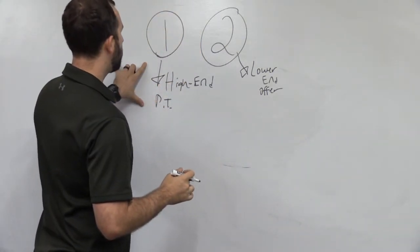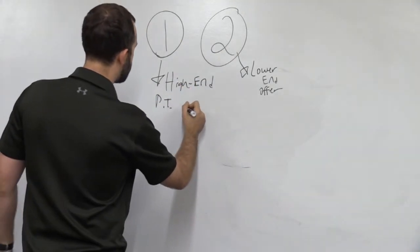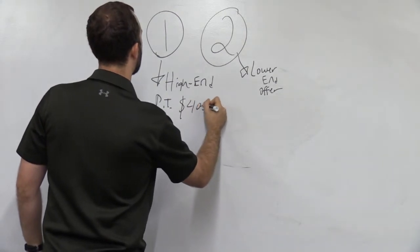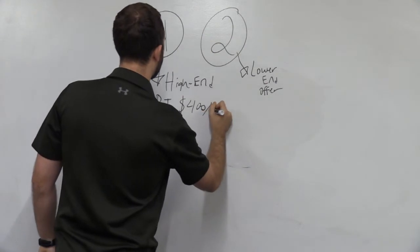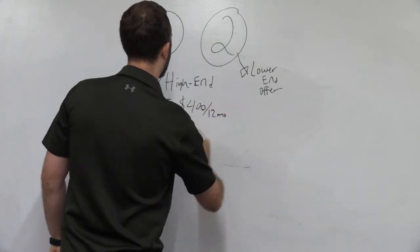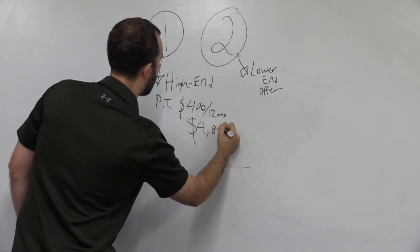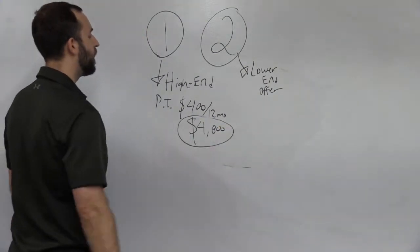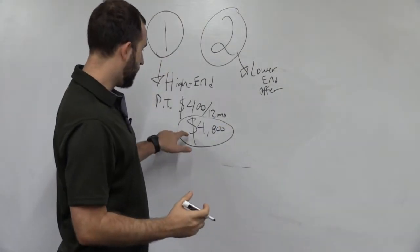Now, what we want is we want this high-end offer. And I'm just going to give you an example just so we can put out some numbers here. So let's say it's $400 a month. And it's a 12-month commitment. That means annually, you will generate $4,800.